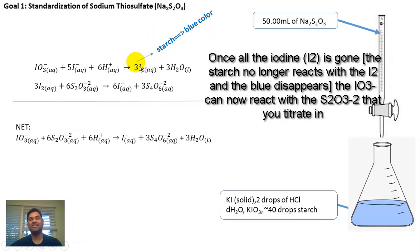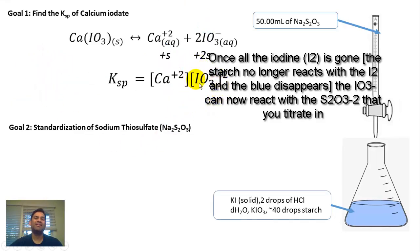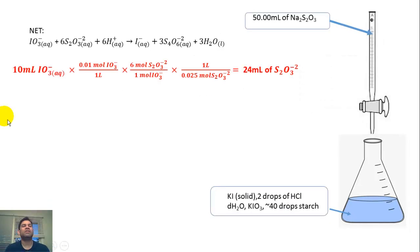When all of the I2 is gone, it will no longer react with the starch, and the blue color will disappear. So when all of the S2O3²- reacts with all of the IO3-, the blue color disappears. It is this IO3- that you're going to use and plug into the Ksp equation to get your Ksp.